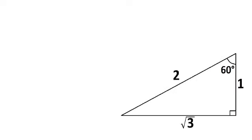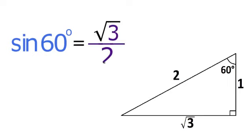You can use this triangle to find the values of trig ratios when theta equals 60 degrees. For example, the sine of 60 degrees equals O over H, which equals radical 3 over 2.